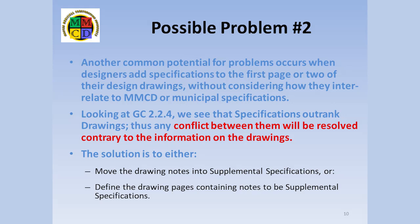A second situation I see frequently is as follows. Designers add specifications to the first page or two of their design drawings. From a designer's point of view, this makes sense to ensure their design assumptions and specification requirements are easily available to the design reviewer and to the superintendent. However, if this is done without considering how these specifications interrelate to MMCD or to municipal specifications, the potential for conflicts is likely. If we look at GC 2.2.4, we see that supplementary specifications rank 5th, while project drawings rank 7th. Thus, any conflict between them will be resolved contrary to the information on the drawings. Obviously, this is not what the designer, and likely the owner as well, want to happen.